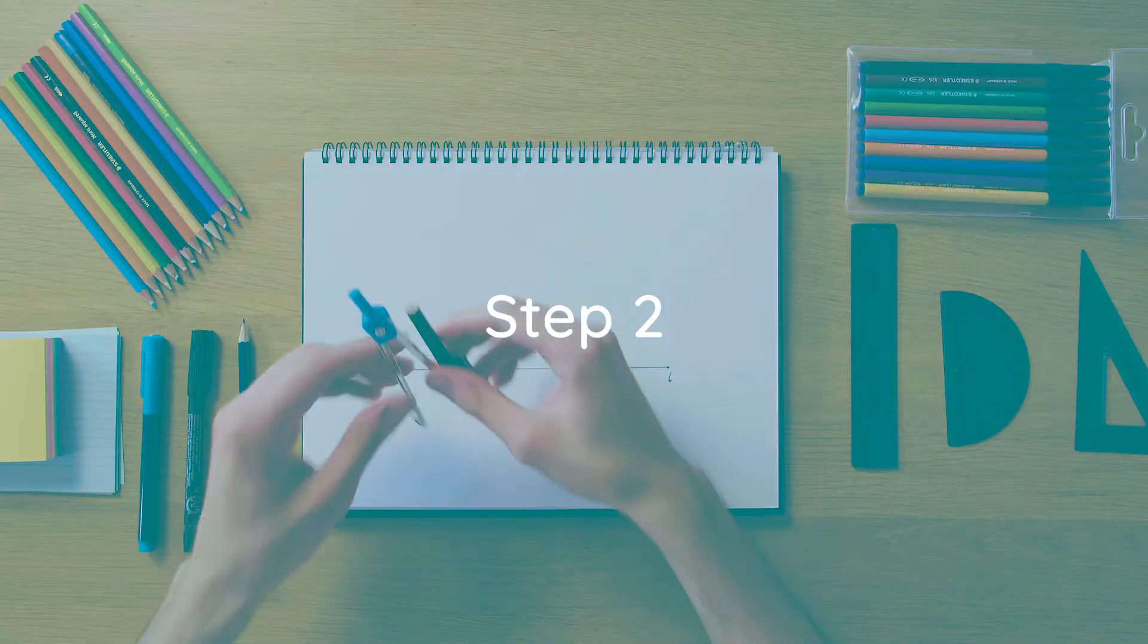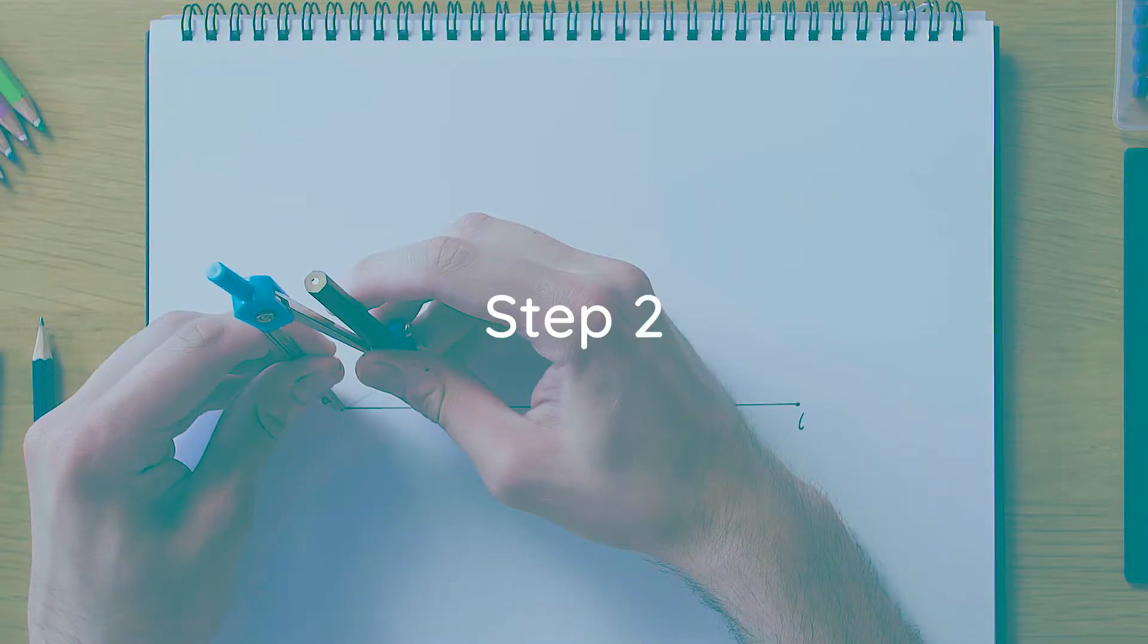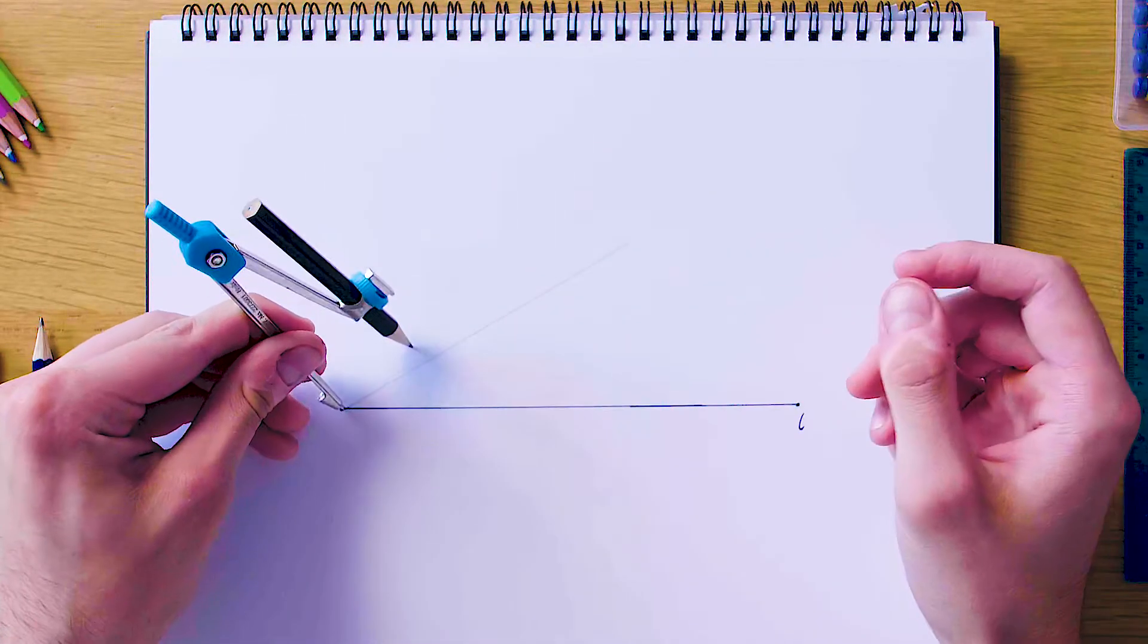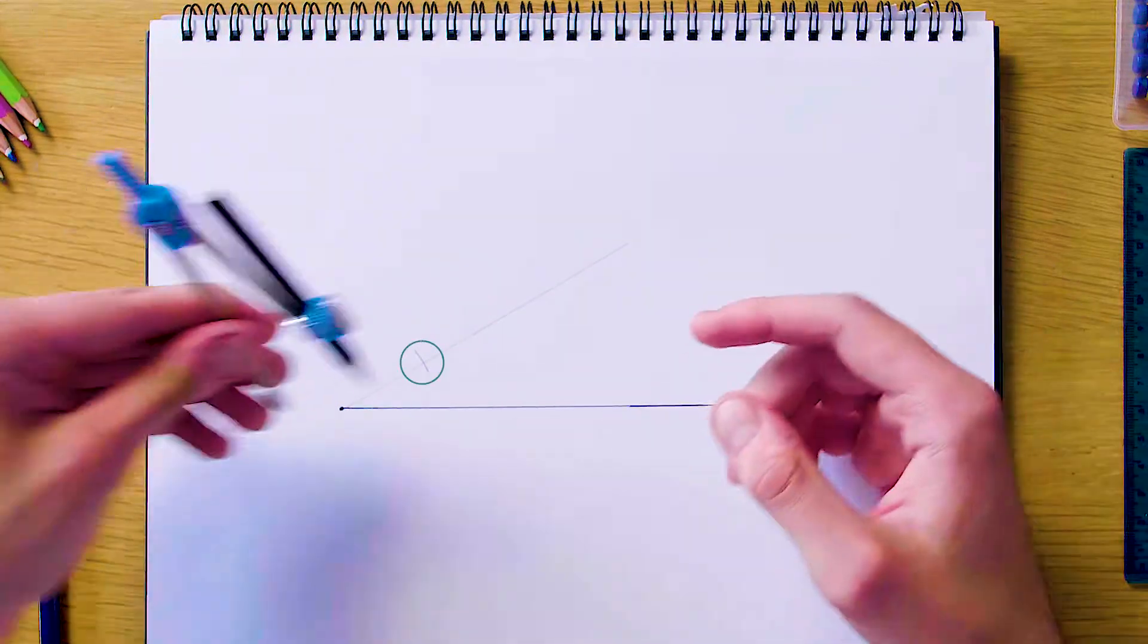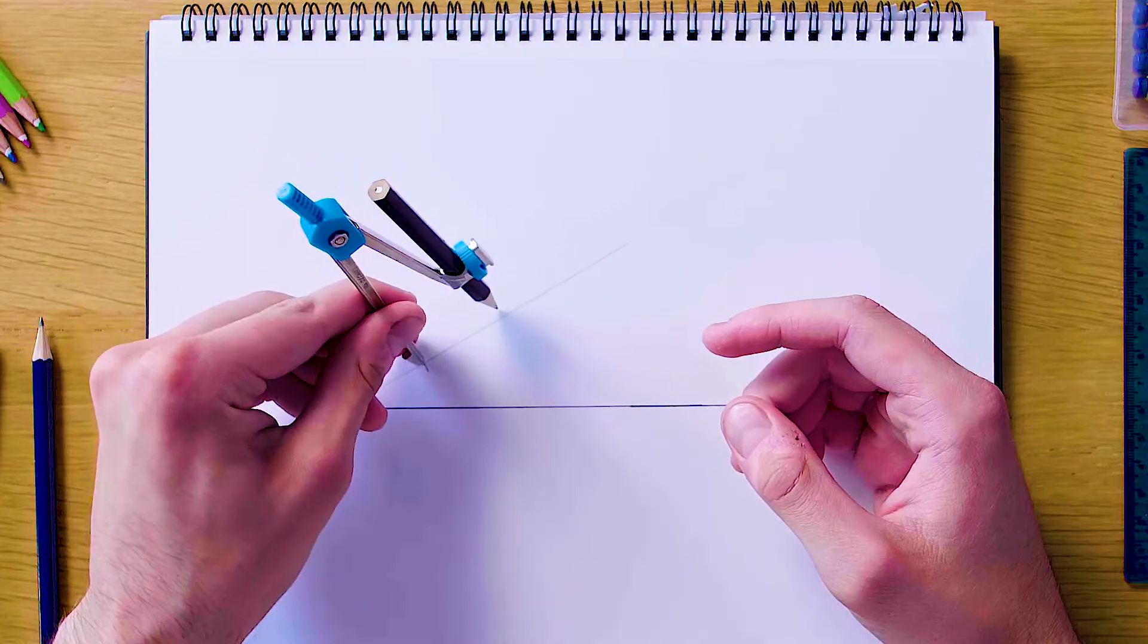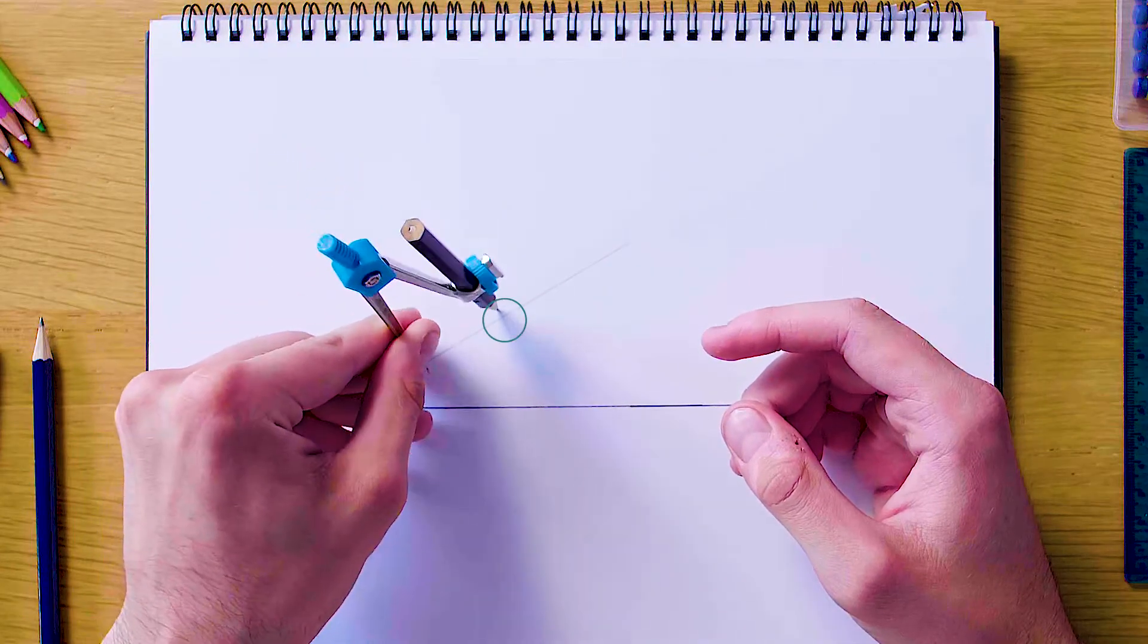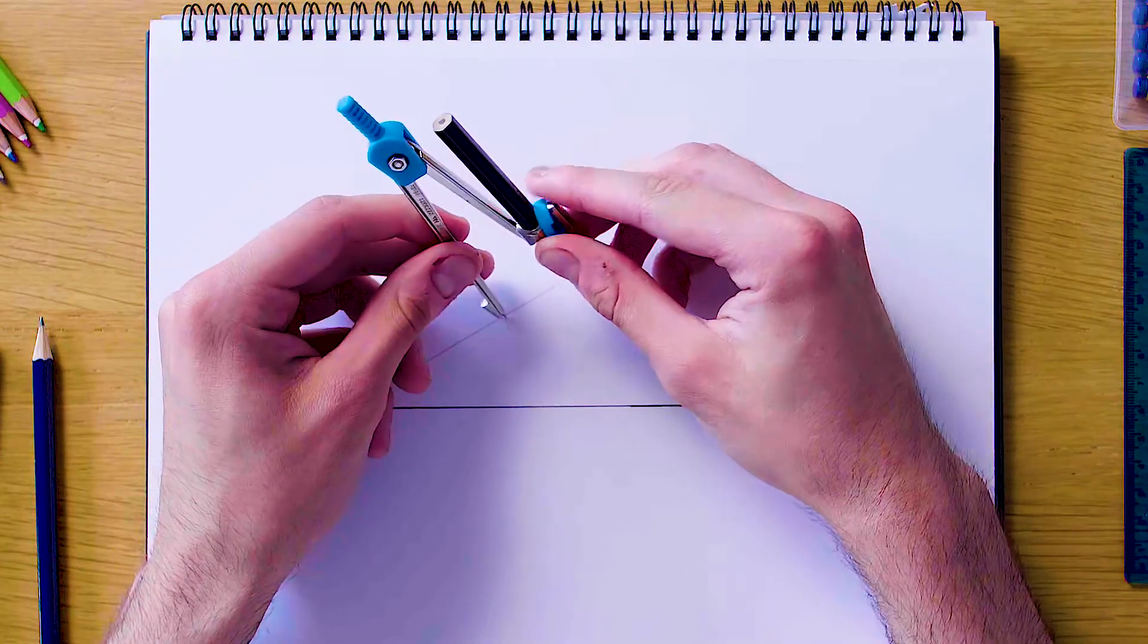Our second step is going to be to grab the compass and start drawing arcs up on this line we've just drawn. So our first one is going to overlap somewhere here and create an intersection, and then our second arc is going to be from this new point of intersection again on the same line, and then we're just going to do the same thing again a third time.